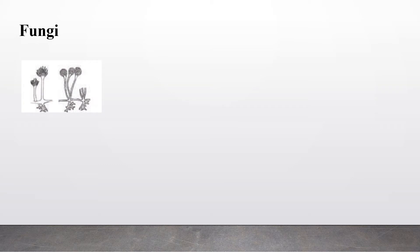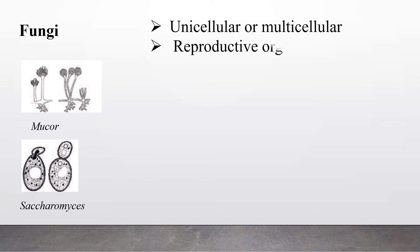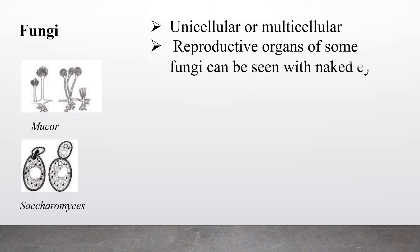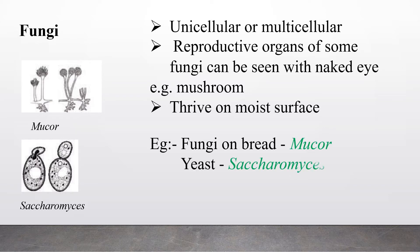Let's move on to learn about fungi. In this picture you can observe a type of fungi named mucor. These are Saccharomyces. Fungi may be unicellular or multicellular, and the reproductive structures of some fungi can be seen with the naked eye. Mushroom is an example of a reproductive structure of fungi. They can thrive on moist surfaces. Examples of fungi on bread are mucor and yeast, which means Saccharomyces.